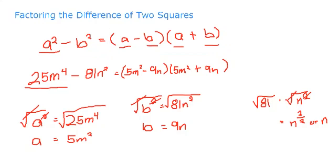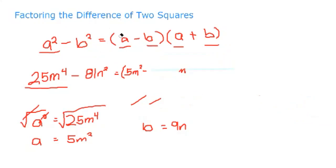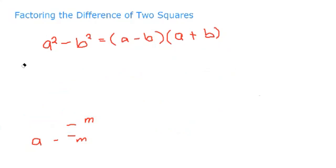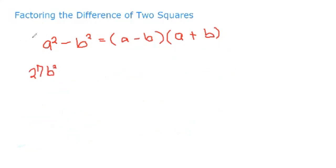Another example. Follow the pattern again. Write down the formula: a squared minus b squared is equal to the quantity a minus b times the quantity a plus b. Another example: we have 27b raised to 5 minus 3bc squared.